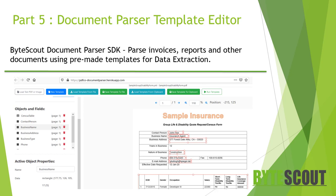Consider a document type like invoices, which can be laid out in thousands of different ways. Invoices from different companies or even different departments within the same company may have slightly different formatting. However, there is a common understanding of the structured information that an invoice should contain, such as an invoice number, an invoice date, the amount due, and the list of items for which the invoice was sent.